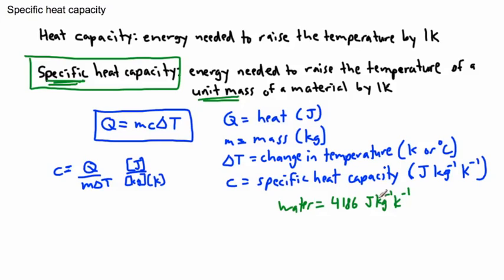Now be very careful if you're ever solving questions with this. Sometimes they're going to give you the specific heat capacity in grams instead. So then you'd have to move the decimal over by three, so it'd be 4.186 instead. Just watch out for this. I've defined it here with kilograms; some people do it with grams.